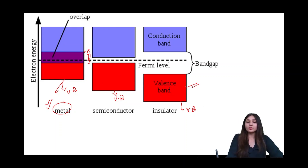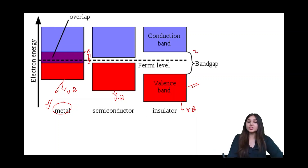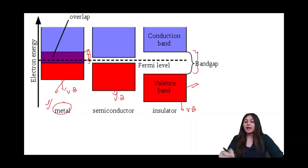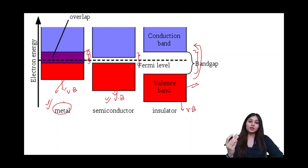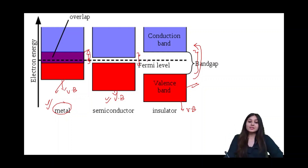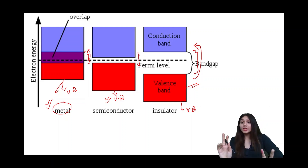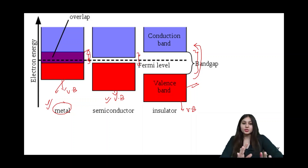In insulators, the valence band has certain electrons, but there is a huge energy gap which is never possible for the electrons to overcome — and that is why insulators never conduct electricity. Whereas in semiconductors, the energy gap is quite small, so the electrons cannot readily go to the conduction band, but if they are provided with a certain amount of energy, they can do that — that's why semiconductors may conduct electricity in certain conditions.